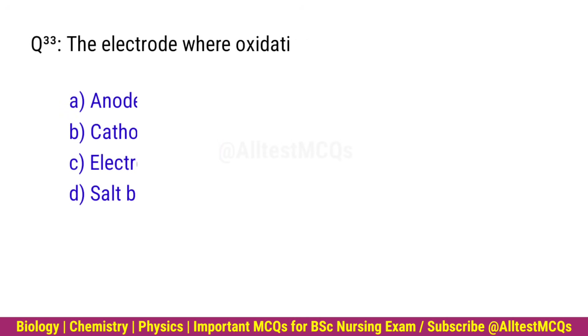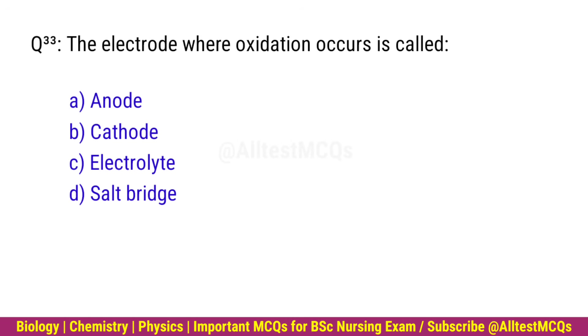Q33. The electrode where oxidation occurs is called? Correct option is A. Anode.